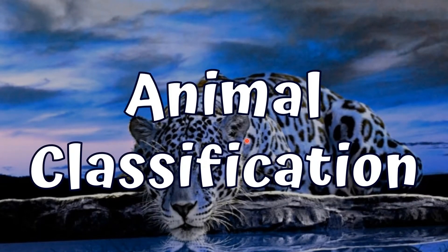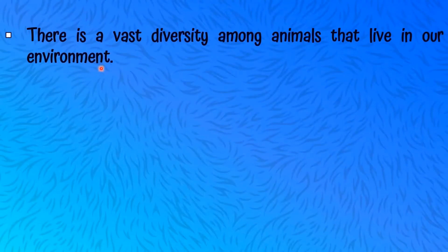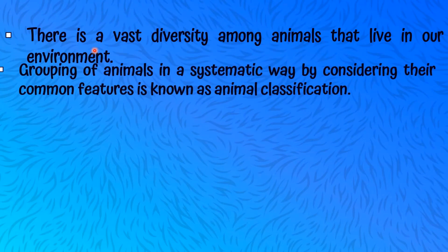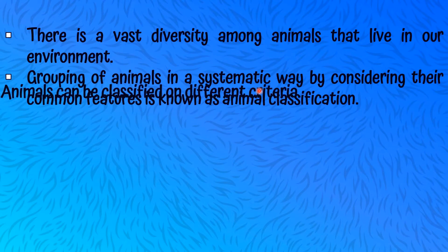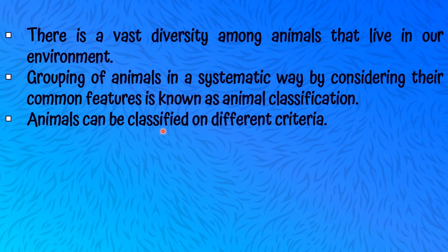Animal Classification. There is a vast diversity among animals that live in our environment. Vast means different. Grouping of animals in a systematic way by considering their common features is known as Animal Classification. Animals can be classified on different criteria.